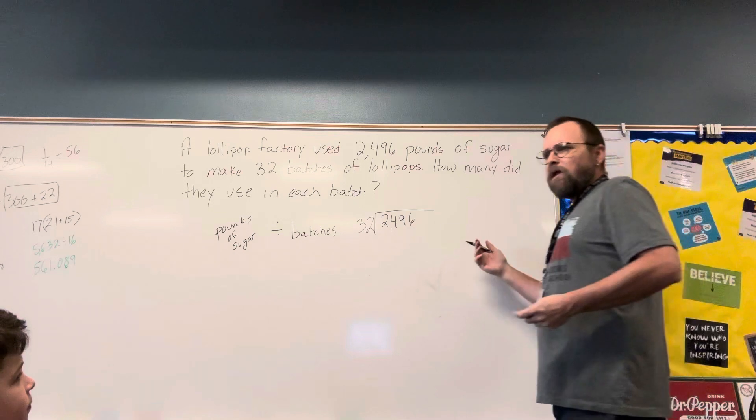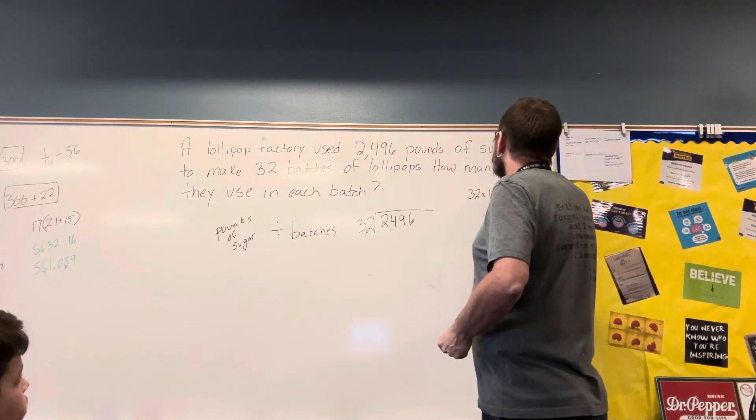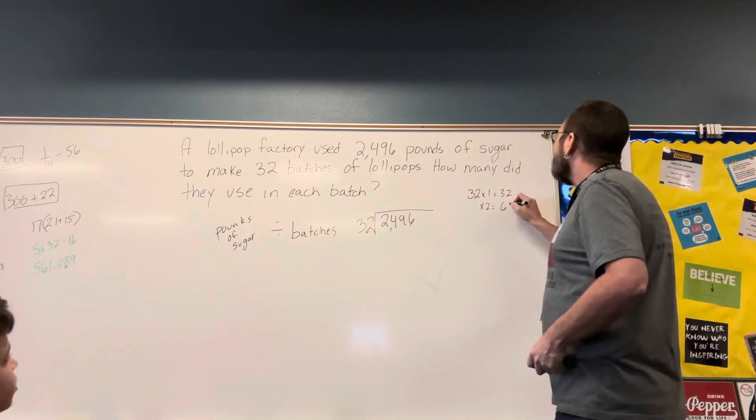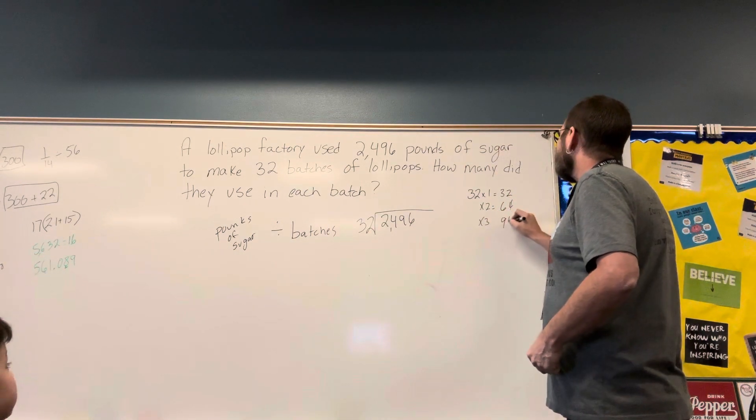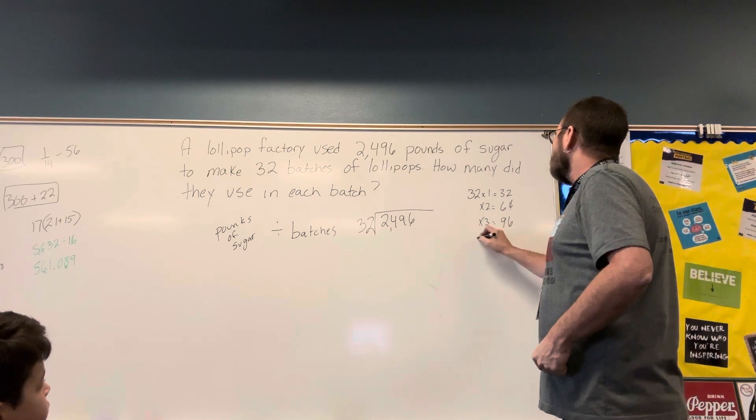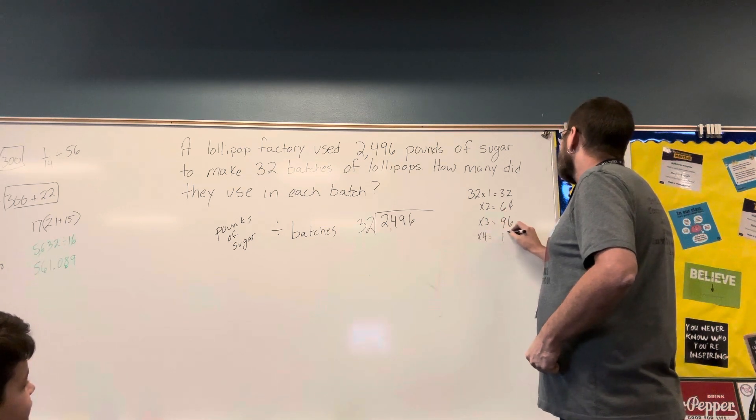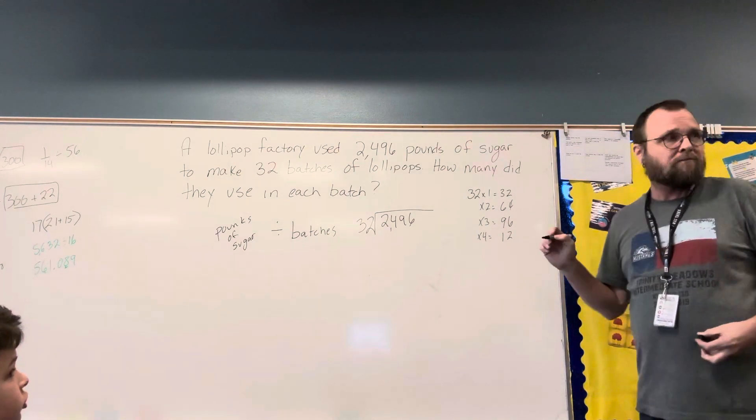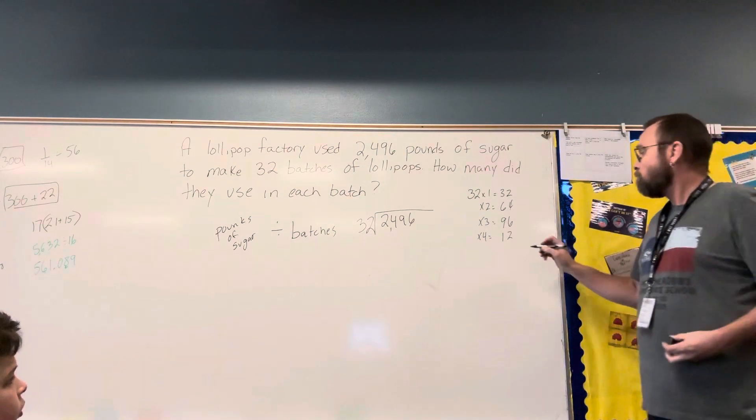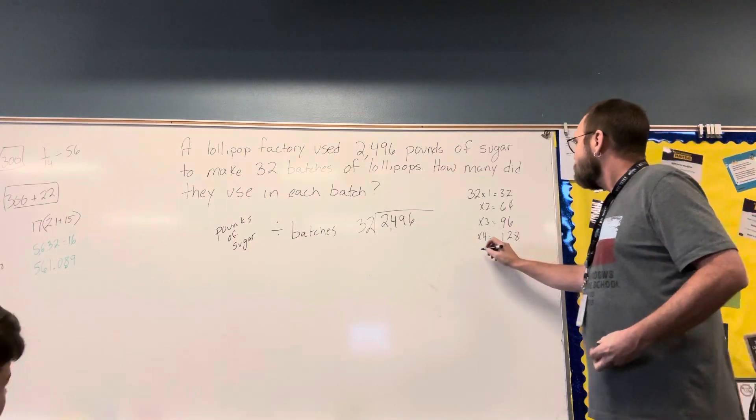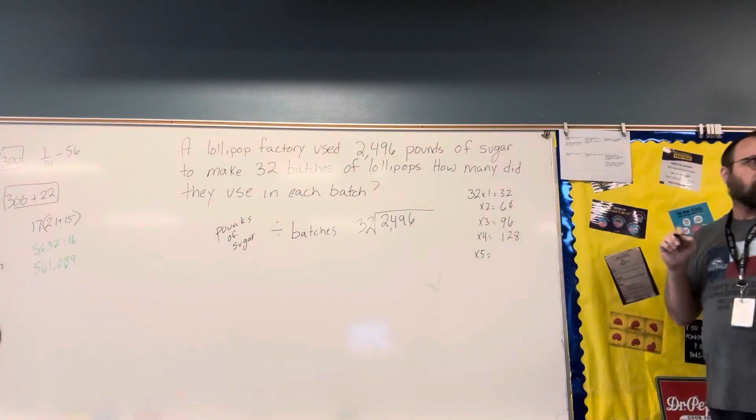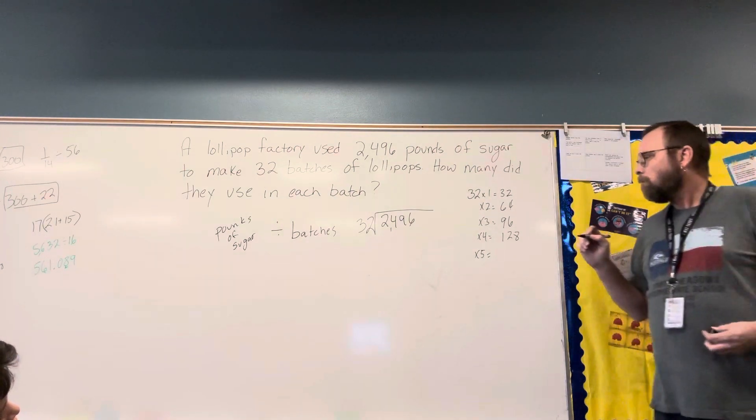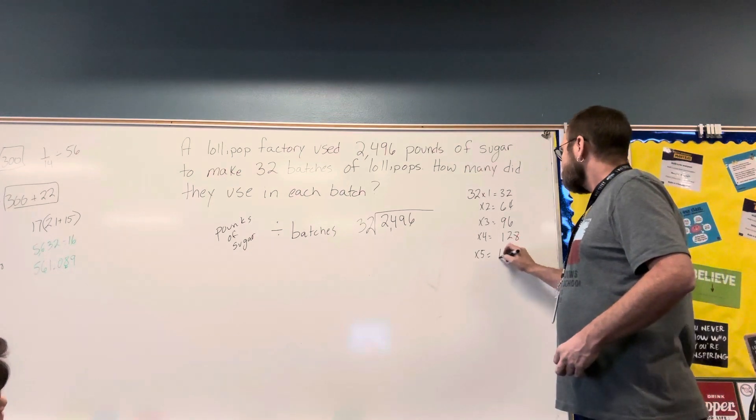So I'm assuming that someone can tell me 32 times 1 is 32, times 2 is 64, times 3 is 96, times 4 is 128, times 5 is 160.